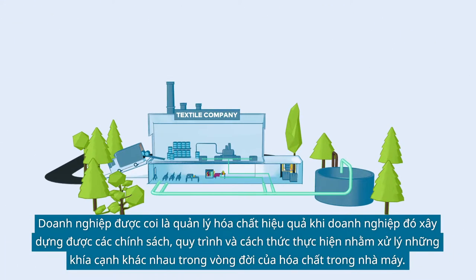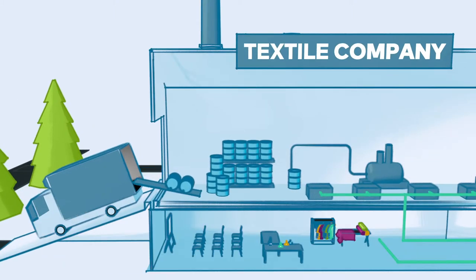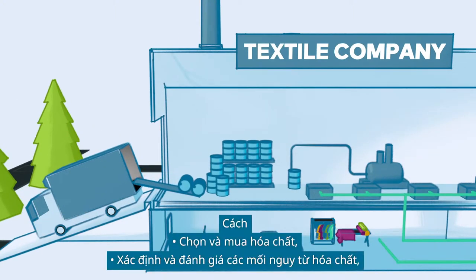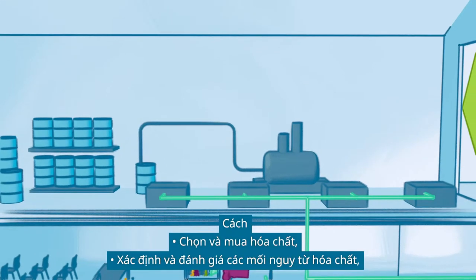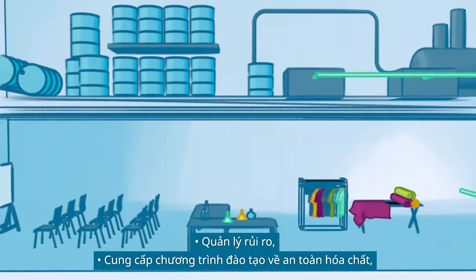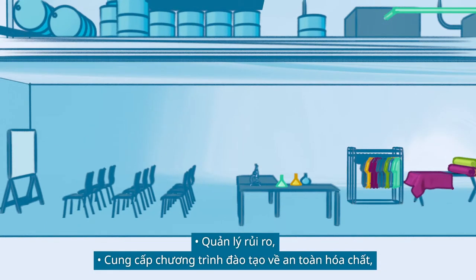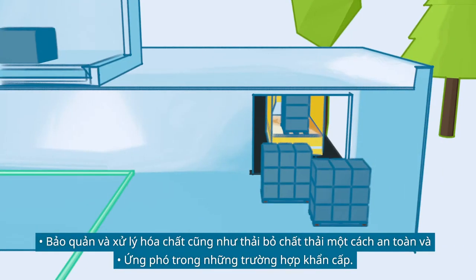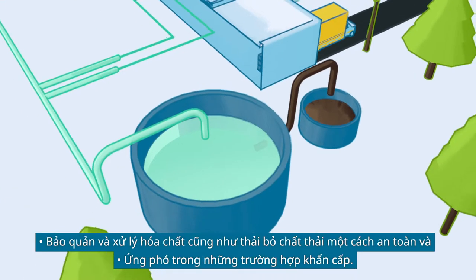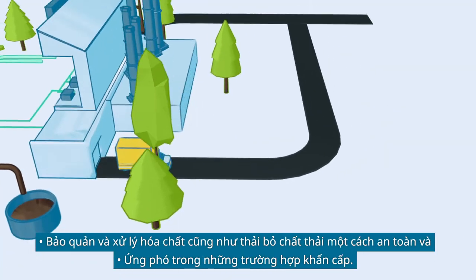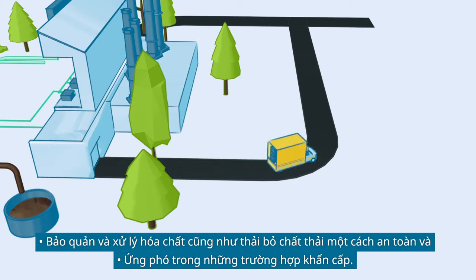Effective chemicals management means that policies, procedures and practices are in place that address the different aspects of the life cycle of chemicals in the factory: how to select and purchase chemicals, identify and assess chemical hazards, manage the risk, provide chemical safety training, safely store and handle chemicals, as well as dispose waste and deal with emergencies.